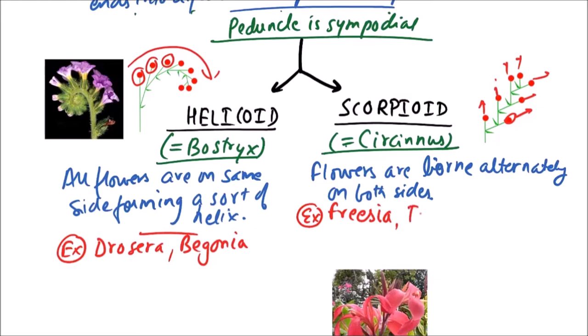The examples include Freesia, Tacoma, Heliotropium, Ranunculus, etc.